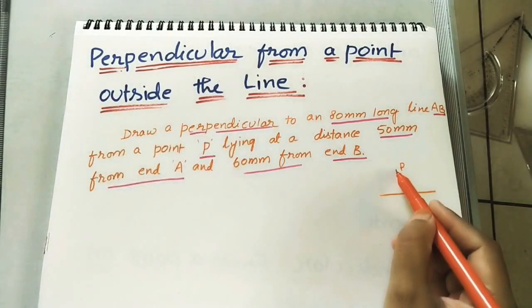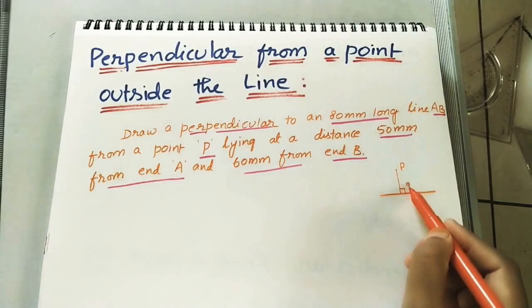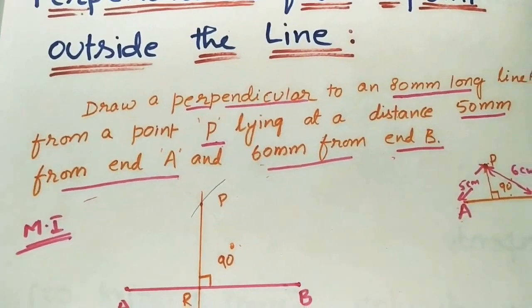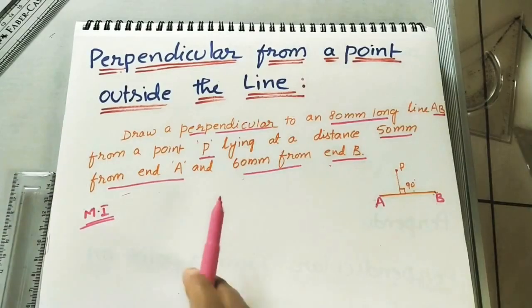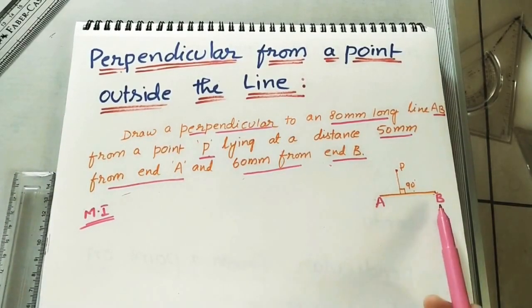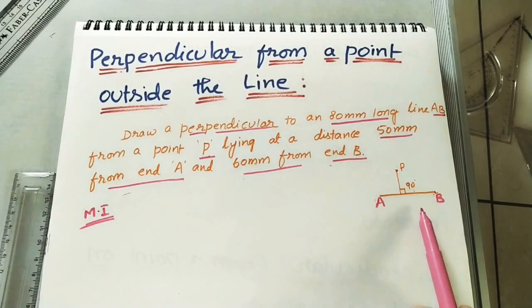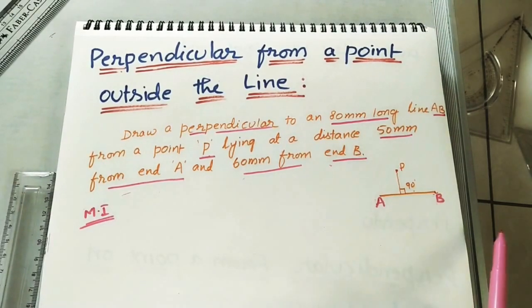Perpendicular means we have to do the 90 degrees line. I took one textbook question for doing the perpendicular line. Take the line dimension if they have not given. We can assume any dimension 5 cm, 10 cm, 15 cm like that.